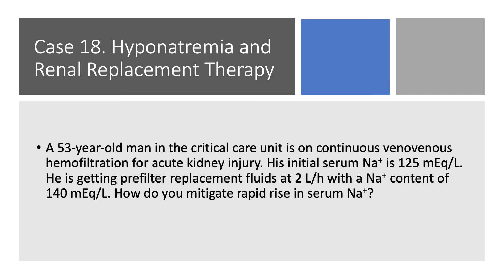Case 18, the last case. A 53-year-old man in the critical care unit is on continuous veno-venous hemofiltration for acute kidney injury. His serum sodium is 125. He's getting pre-filter replacement fluids at 2 liters per hour with a standard sodium content of 140. How do you mitigate against the rise in serum sodium? Here we have a patient who is hyponatremic at 125, and he's getting fluids at sodium 140. If we let that go quickly, his serum sodium is going to rise to 140, and we'll have overcorrection — really fast correction. So this is not desirable.